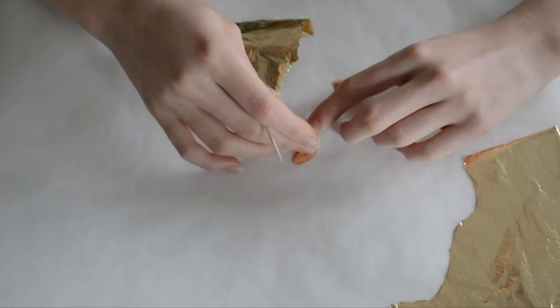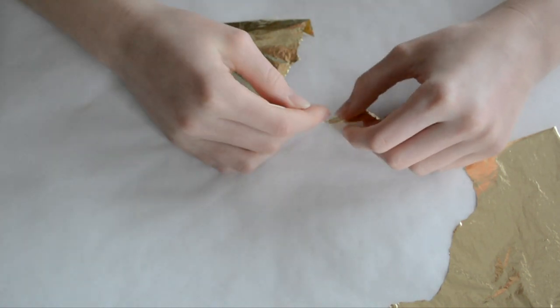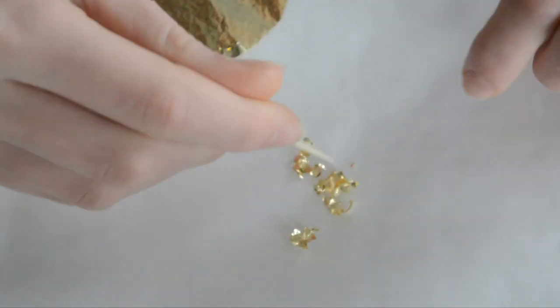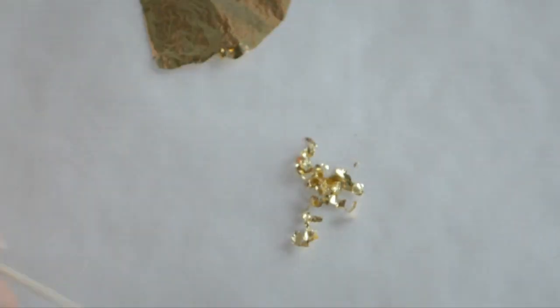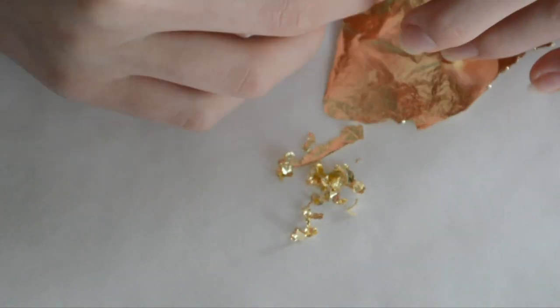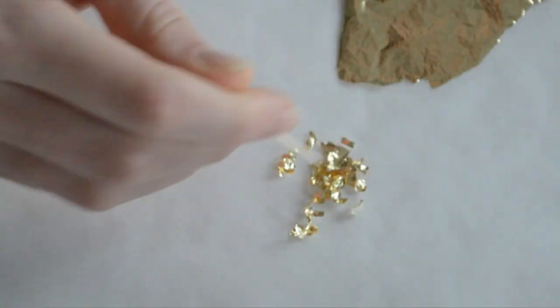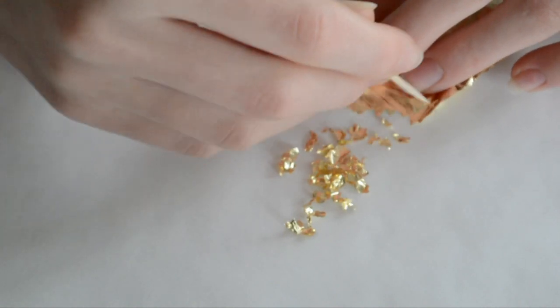Then I took a toothpick and held one side of the leaf down on my finger, and with the toothpick I kind of ripped at it, like pushed on it and went around it. It's kind of hard to describe—you see it best if you just watch the video. You're just gonna want to kind of rip the gold leaf up into tiny little pieces.